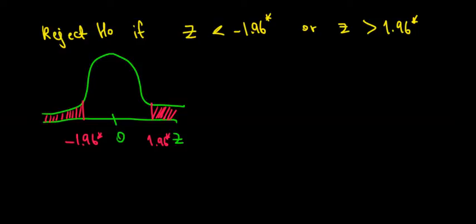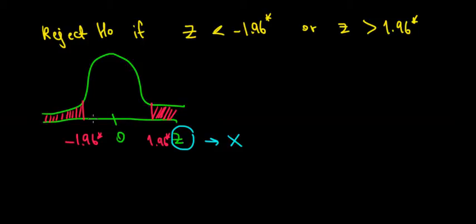These are the z-values, but what we're interested in is finding the corresponding values of the filling weight. Since this is already the standardized value, we want to convert it into x-values — we want to find out for which x-values we are going to reject the null hypothesis.